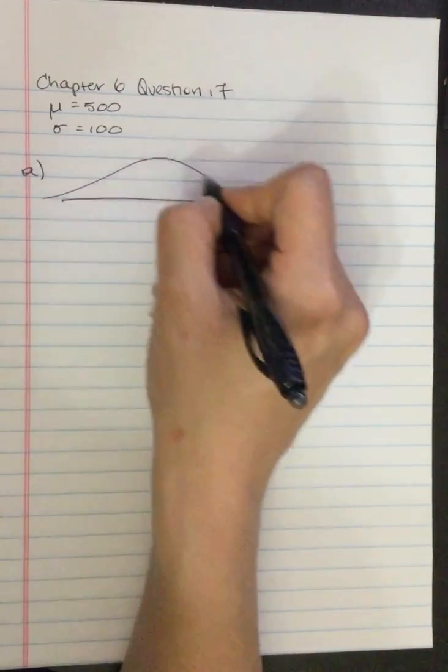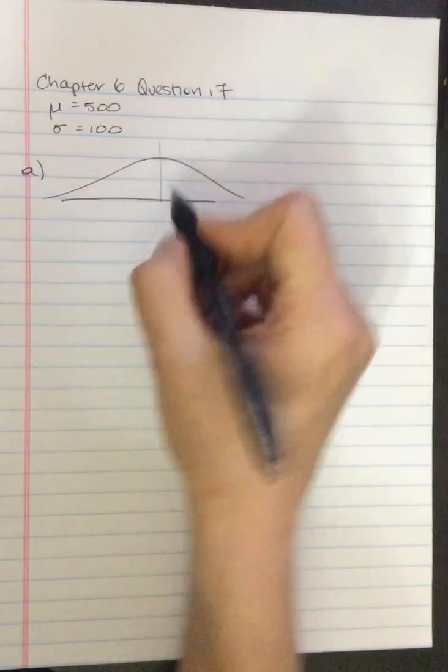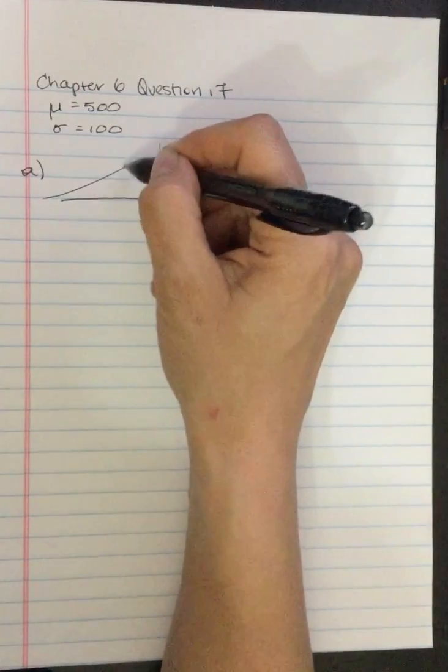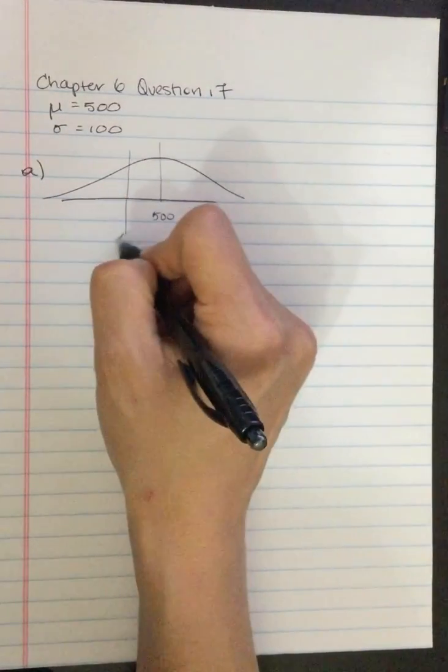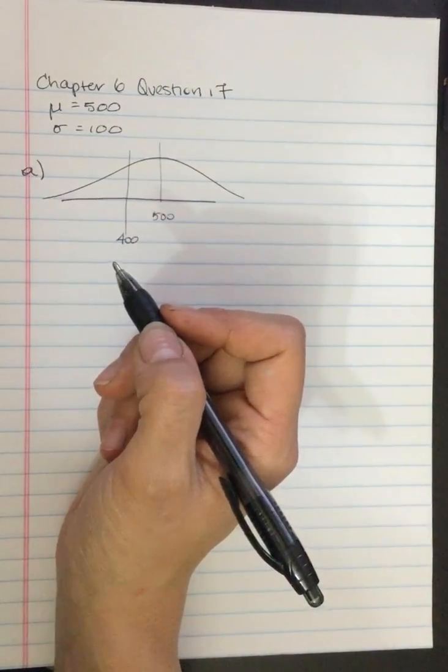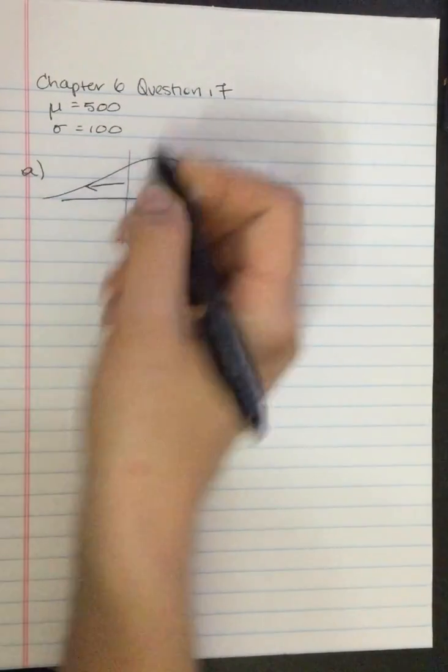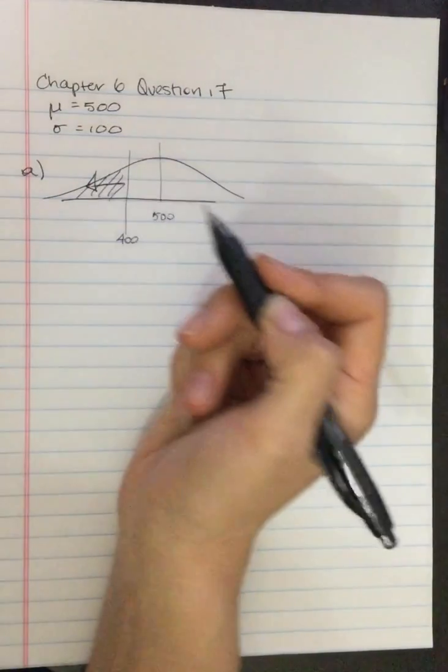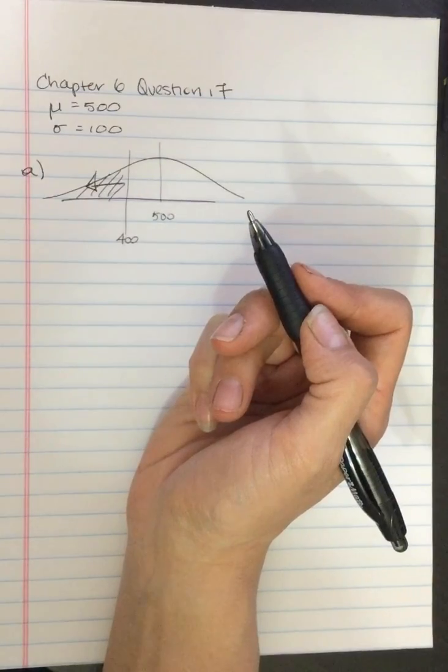So if we go here, we draw it in. This is our mean, 500. The score that we're going to put in is 400. What proportion have SAT scores less than 400? So we're looking for this part. We're going to be looking for the tail once we compute that z-score.